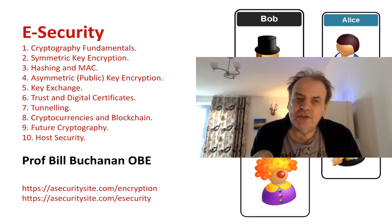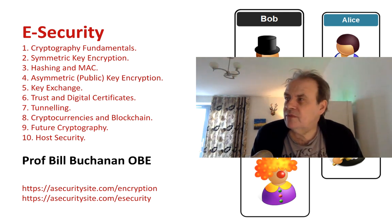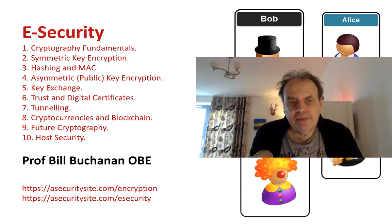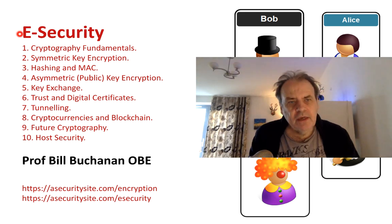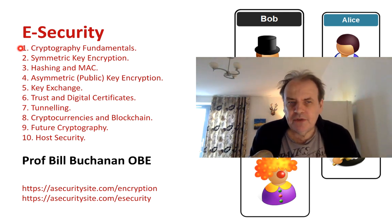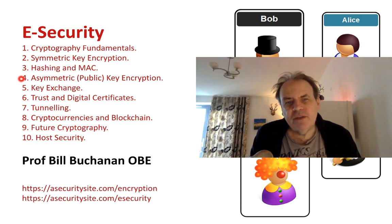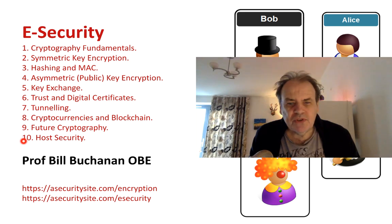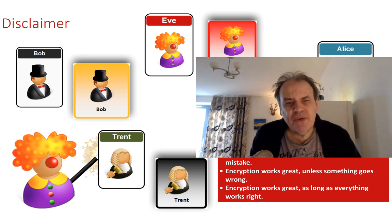This is the introduction to the e-security module. The module numbers are CSN 11117 and CSN 11102. The main focus is around cryptography and host-based security, providing fundamental knowledge around key principles. It splits into 10 core units covering cryptography fundamentals, symmetric key encryption (also known as secret key), hashing and MAC, asymmetric encryption (also known as public key encryption), key exchange, trust and digital certificates, tunneling, cryptocurrencies and blockchain, future cryptography, and host security.